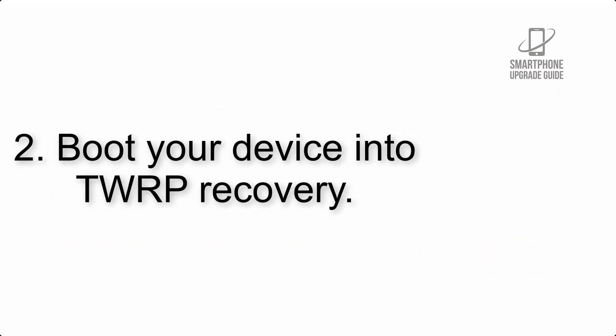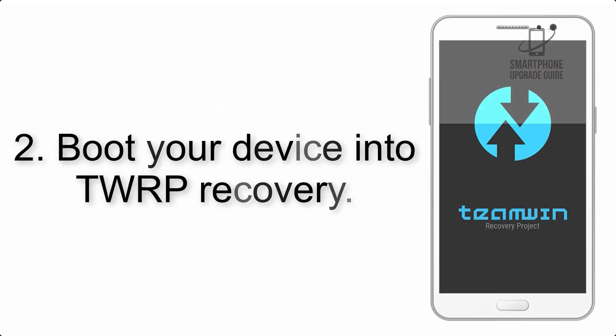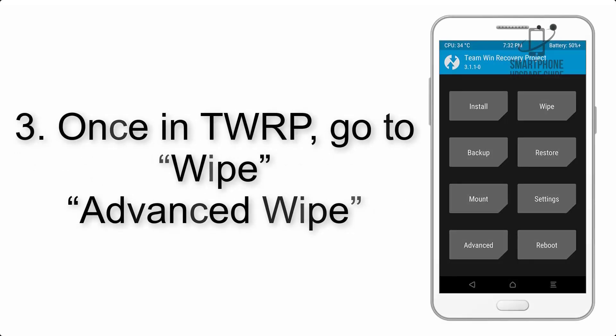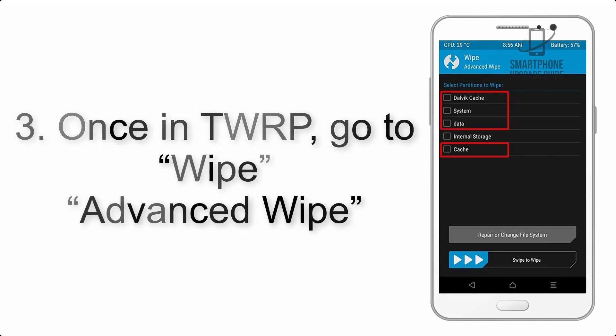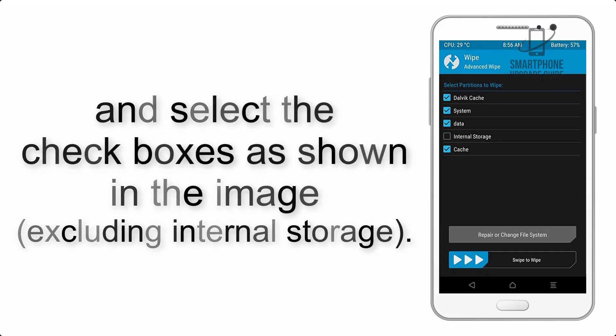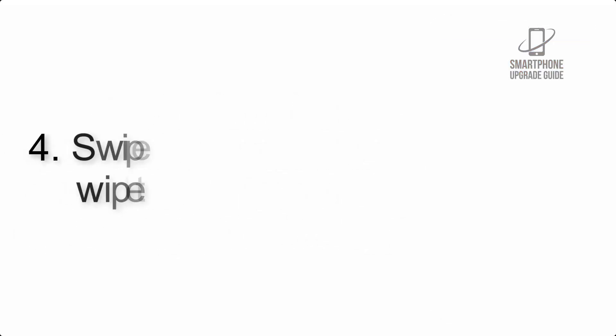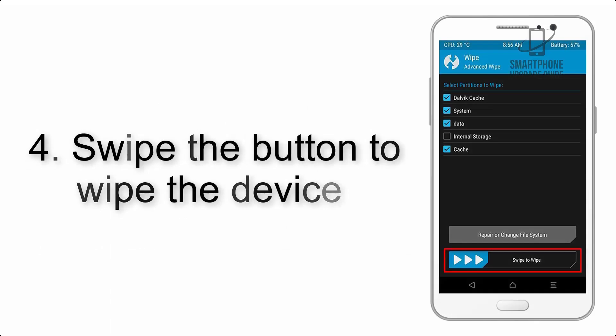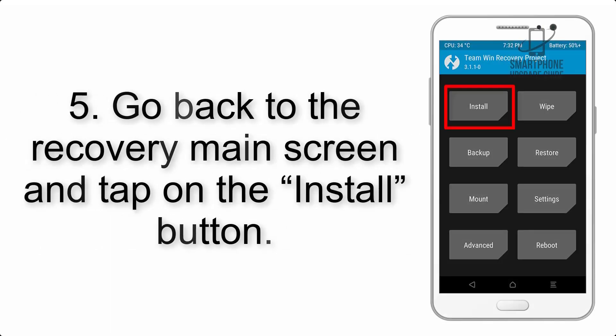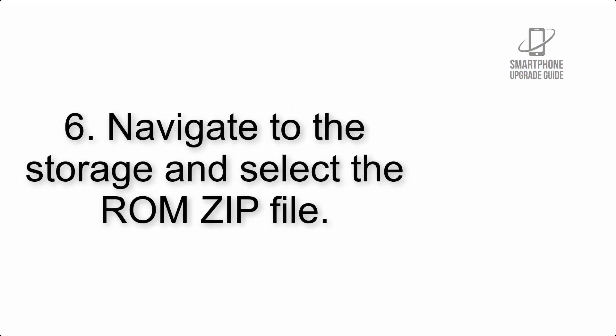Step 2: Boot your device into TWRP recovery. Once in TWRP, tap on Wipe, then Advanced Wipe, and select the checkboxes as shown in the image, excluding internal storage. Step 4: Swipe the button to wipe the device. Step 5: Go back to the recovery main screen and tap on the Install button.